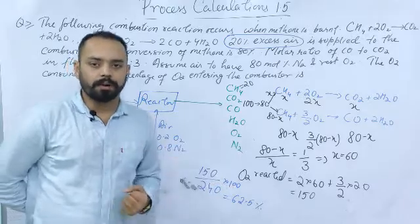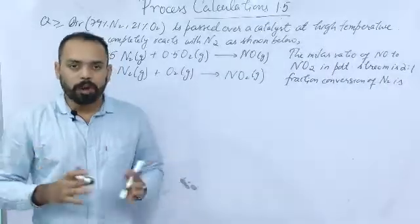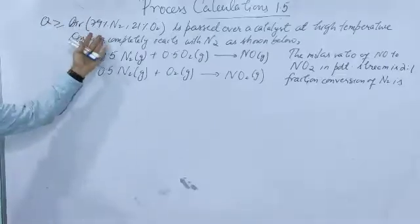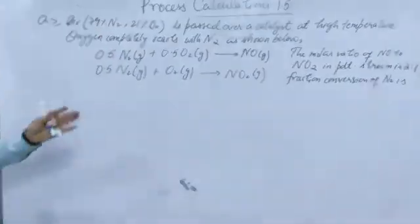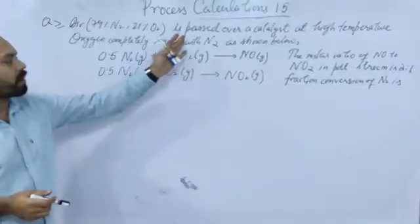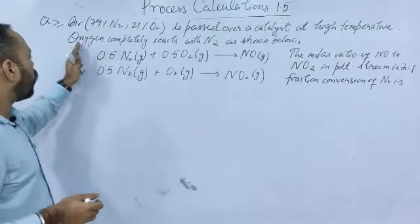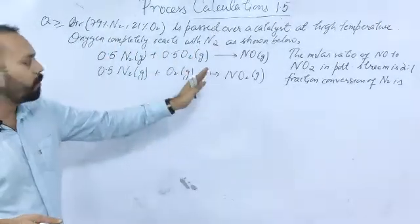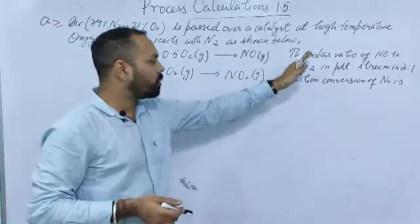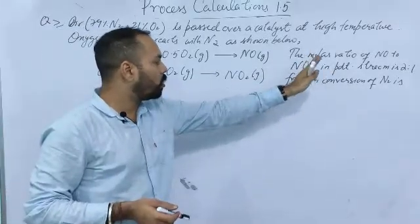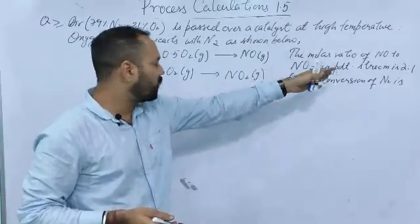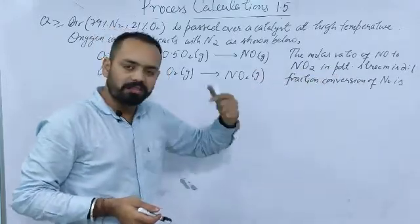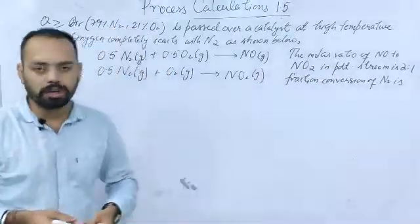Let me discuss the second problem, which is again from GATE. Air composition is 79% nitrogen and 21% oxygen, passed over a catalyst at high temperature. Oxygen completely reacts with nitrogen. The reactions are given. The molar ratio of nitric oxide (NO) to nitrous oxide (N2O) in the product stream is 2 to 1. What is the fractional conversion of nitrogen?